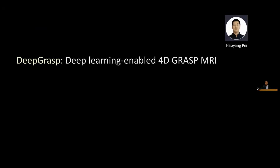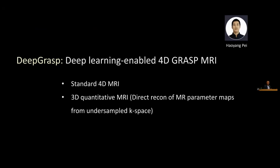Some of our new work is DeepGRASP, a project that Haoyue, a PhD student in our lab, has been working on for a couple of years. The rise of deep learning and artificial intelligence has revolutionized the field of rapid MRI, and we cannot miss this opportunity to improve GRASP with deep learning. We have different versions so far. The ultimate goal is to use deep learning to improve 4D MR reconstruction — for standard 4D MR and also for 3D quantitative MR, where you can treat the 3D quantitative MR as 3D spatial dimensions plus a time dimension reflecting contrast changes or other variables. Instead of just doing acceleration, we're also using deep learning to directly reconstruct MR parameters from undersampled k-space, completely bypassing the conventional reconstruction step.